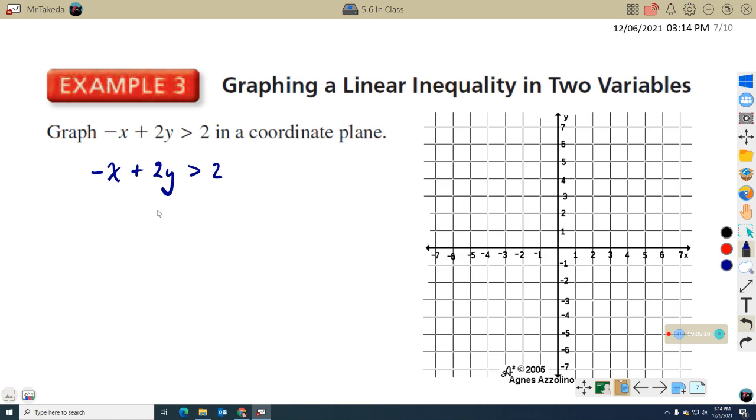So I'm going to add x to both sides. So 2y is greater than x plus 2. Divide everything by 2. Now remember, when we divide by a negative number, we have to reverse the inequality symbol. That's not the case here. So y is greater than 1 half x plus 1.